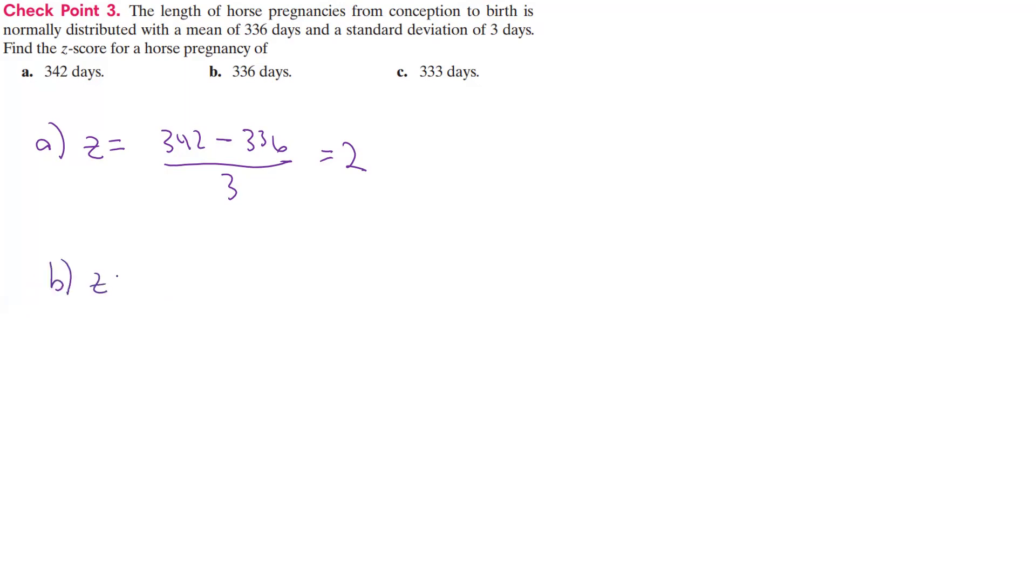For part B, the z-score is 336 minus our mean, which is 336, divided by 3. Well, 0 divided by 3 is 0.